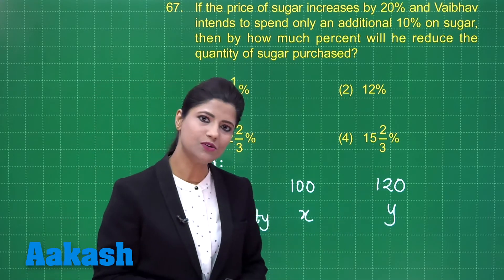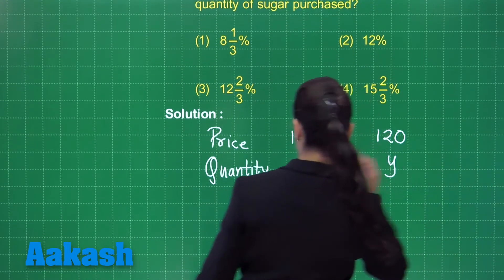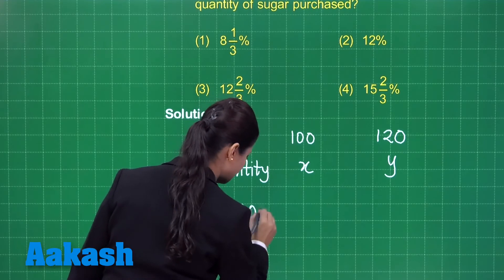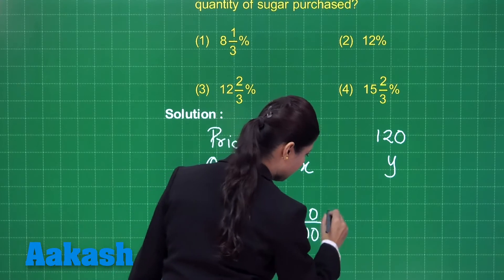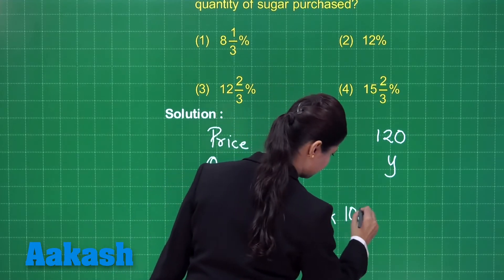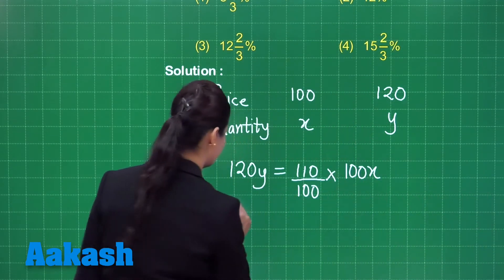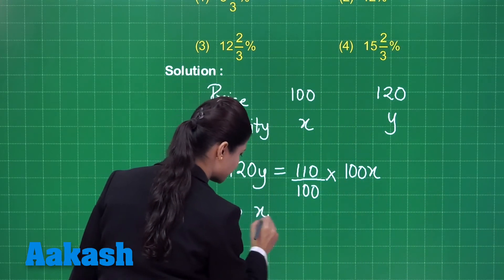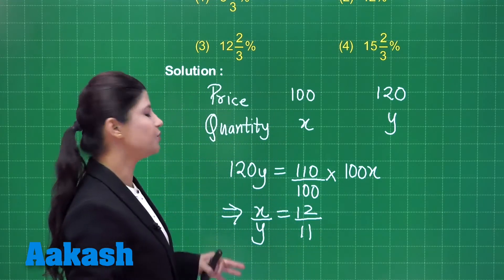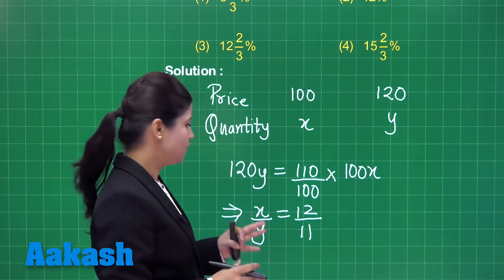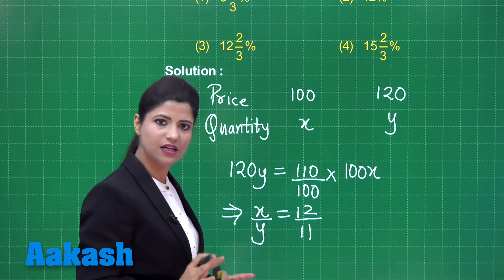He intends to spend only 10% additional, so now he is spending 120y which is clearly 110% of the original cost, that is 100x. When you simplify this, you obtain the value of x upon y which is clearly 12 upon 11. As x upon y is 12 upon 11, you can consider x to be 12k and y to be 11k in terms of the ratio.